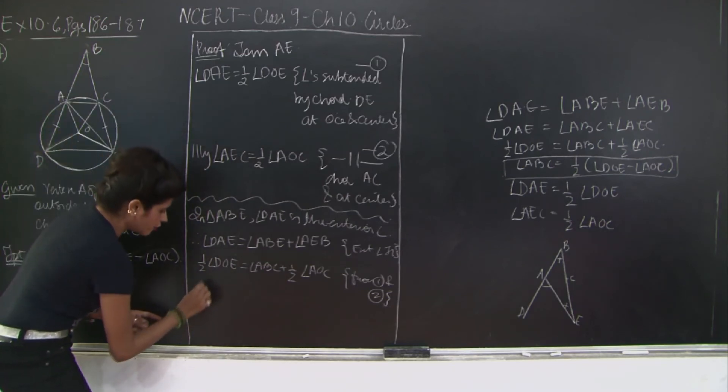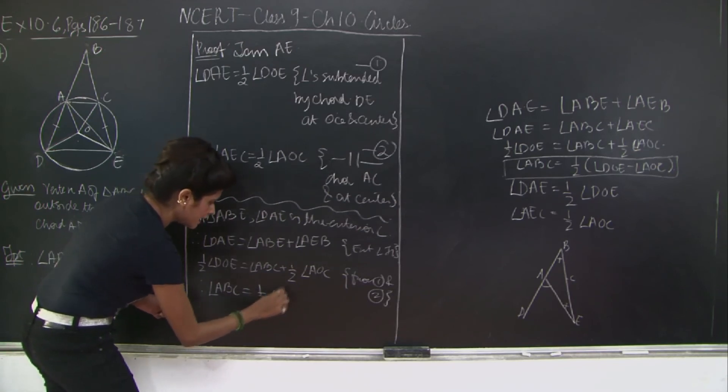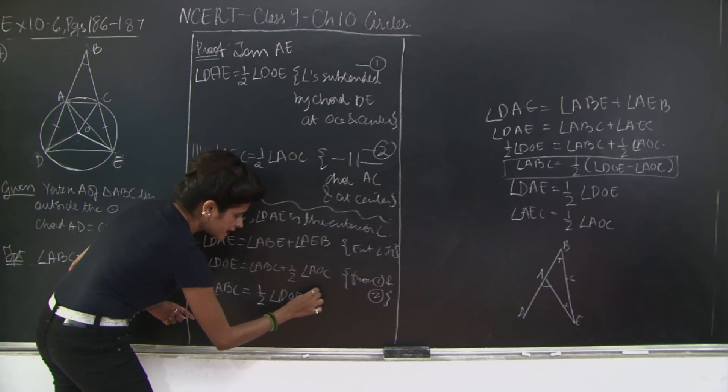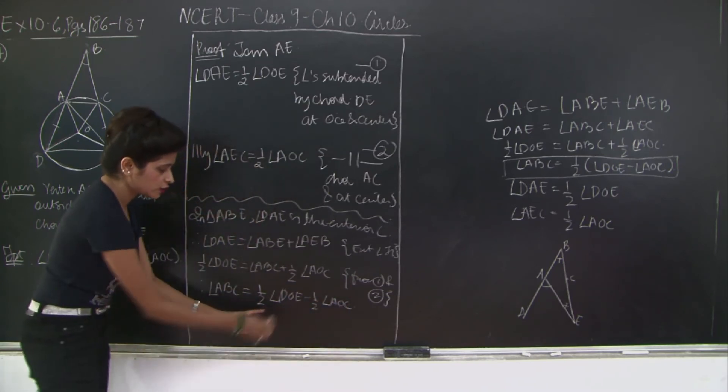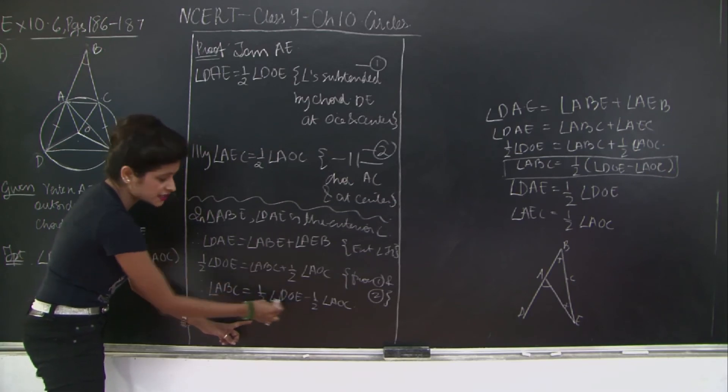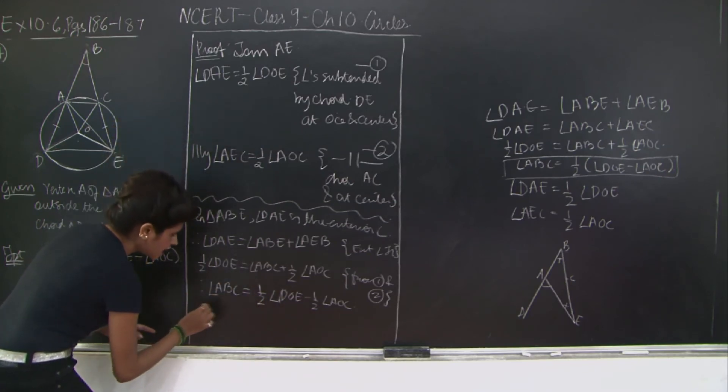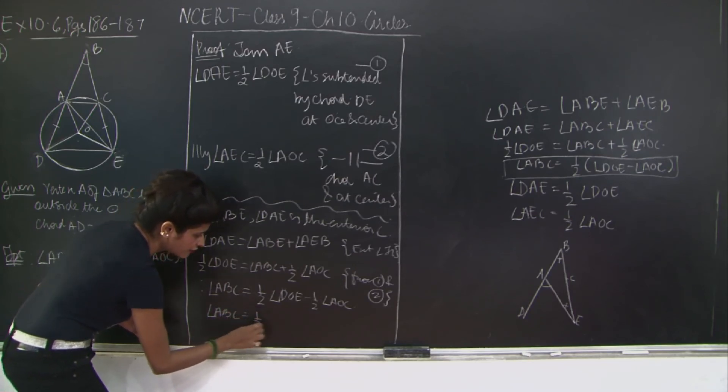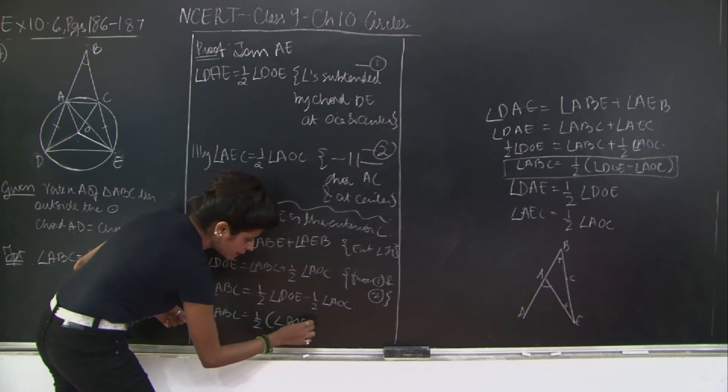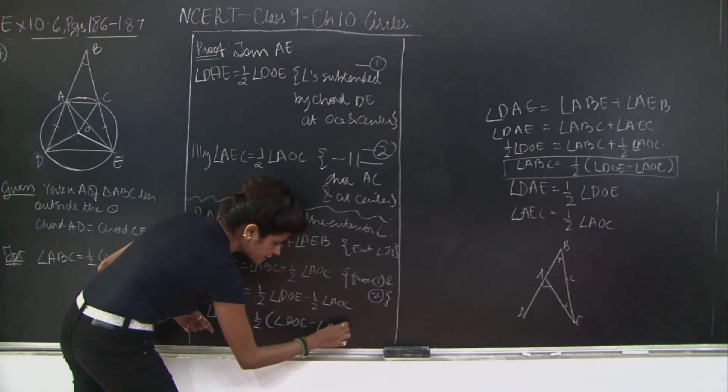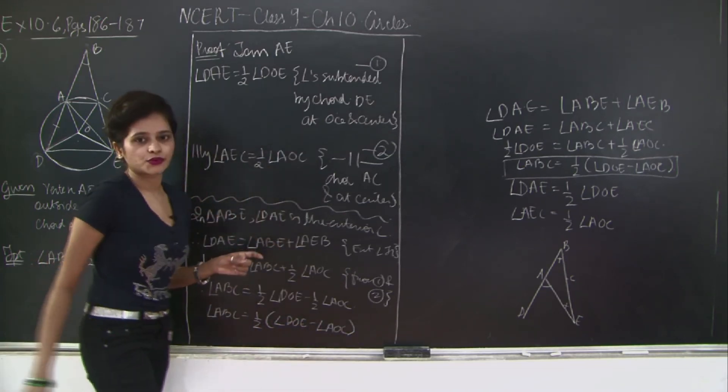Therefore, angle ABC is equal to half angle DOE minus half angle AOC. Hence proved.